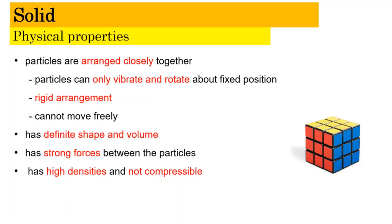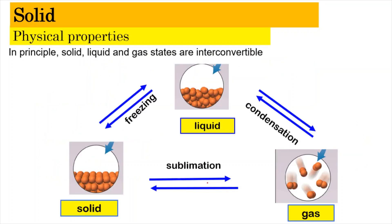For the physical properties of solids, particles are arranged closely together and vibrate at their fixed positions, giving rise to a rigid arrangement. As a result, solids have a definite shape and definite volume. The strong forces between particles also make solids have high densities and be incompressible.